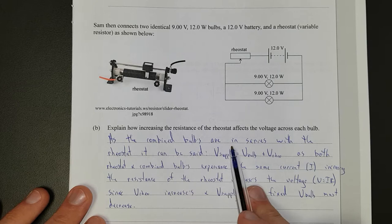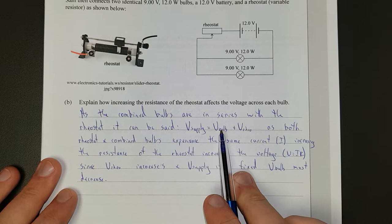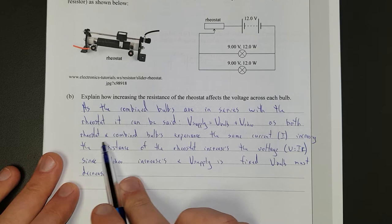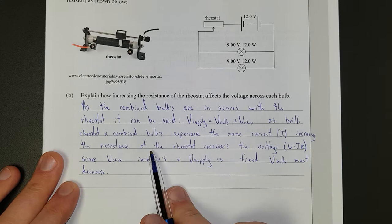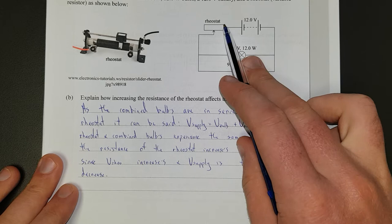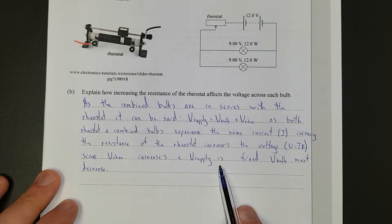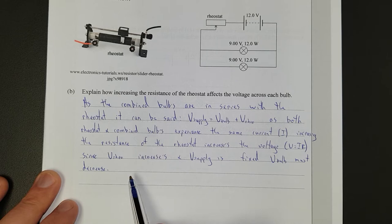So I've said as the combined bulbs are in series with this rheostat, it can be said the voltage of the supply is equal to the voltage of the bulb plus the voltage of the rheostat. As both rheostat and combined bulbs experience the same current, increasing the resistance of the rheostat increases the voltage because V equals IR. Now, since the voltage of the rheostat increases and V supply is fixed, V bulb must decrease.